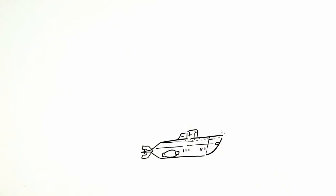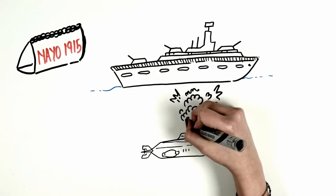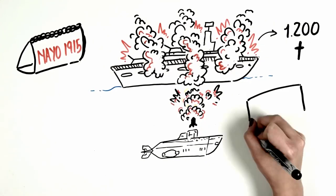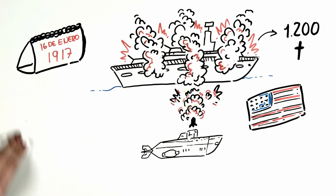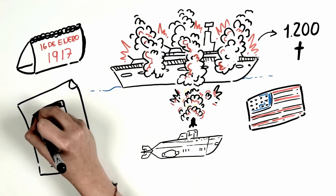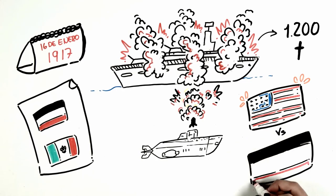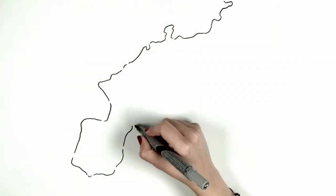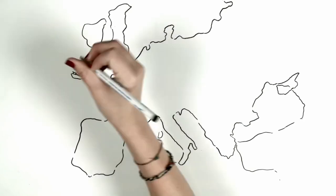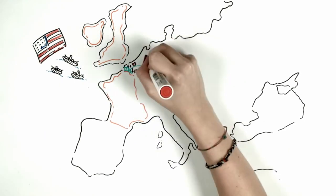In May 1915, a German submarine torpedoed a British civilian cruise ship, in which 1,200 people died, among them 128 US citizens. This event strained US relations with Germany. But when, on January 16th, 1917, the telegram was discovered in which Germany proposed an alliance to Mexico to attack its neighbour, the United States declared war on the imperial powers. This marked a new turning point in the war. The United States began preparing supplies and troops to land in Europe and assist the United Kingdom and France, while the English carried out an offensive in Flanders to neutralize the German submarine bases in Belgium.